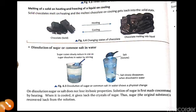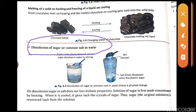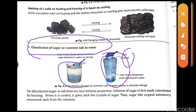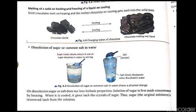The next example is the dissolution of sugar or common salt in water. When we put salt or sugar in water, it fully dissolves to form a solution. This is also a physical change, because on heating we can again get crystallization of the sugar and salt. So all these are common examples of physical changes.